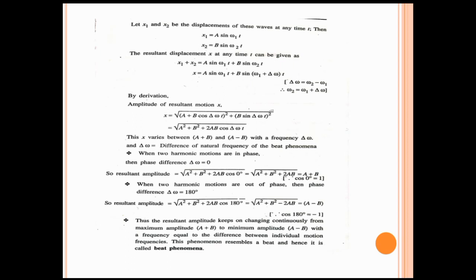Substituting ω₂ = ω₁ + Δω into the displacement equation and simplifying, the final resultant displacement equation becomes: x = √[(A + B cos(Δω·t))² + (B sin(Δω·t))²], which equals √[A² + B² + 2AB cos(Δω·t)]. This shows that x varies between A + B and A − B with a frequency of Δω.